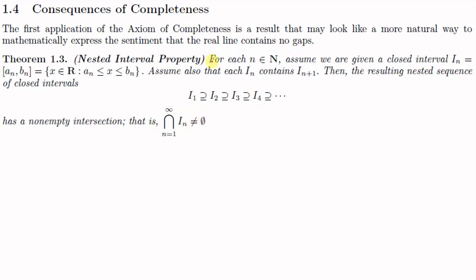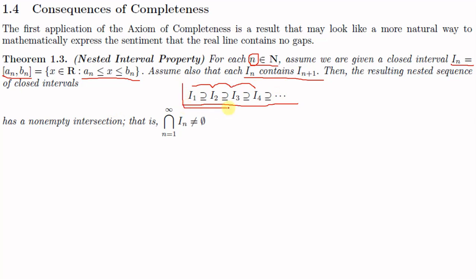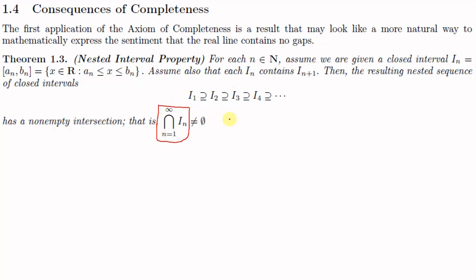That means the infinite intersection ⋂_{n=1}^{∞} I_n is non-empty, i.e., not equal to ∅. To restate: for each natural number n we define a closed interval I_n = [a_n, b_n], which is the set of all real numbers between a_n and b_n inclusive. Given the nesting I_1 ⊇ I_2 ⊇ I_3 ⊇ ..., we must show that ⋂_{n=1}^{∞} I_n is non-empty — that there exists an x in I_n for all n ∈ ℕ.